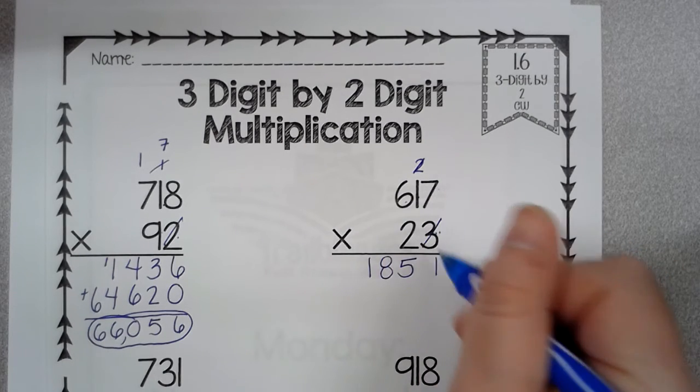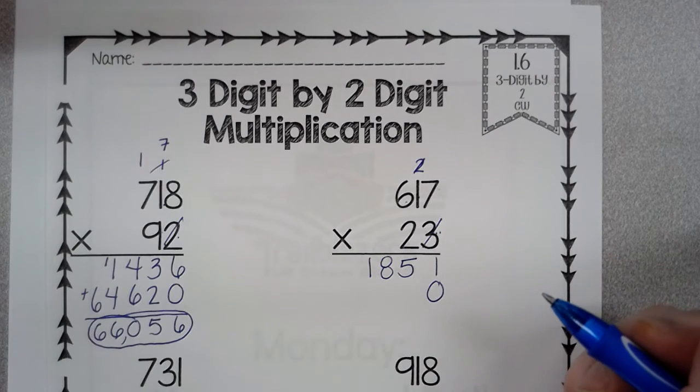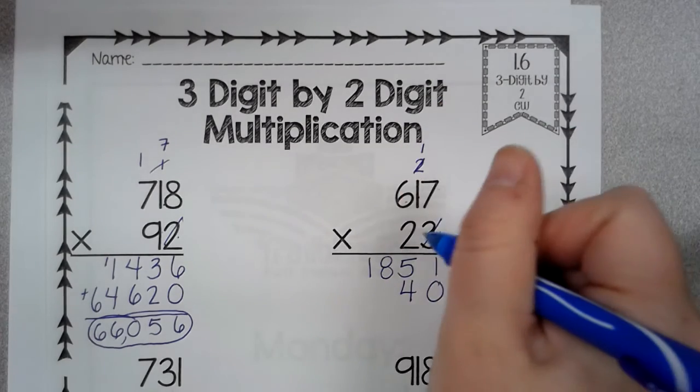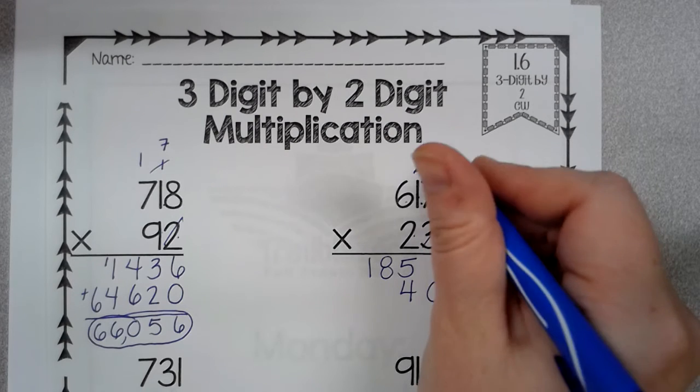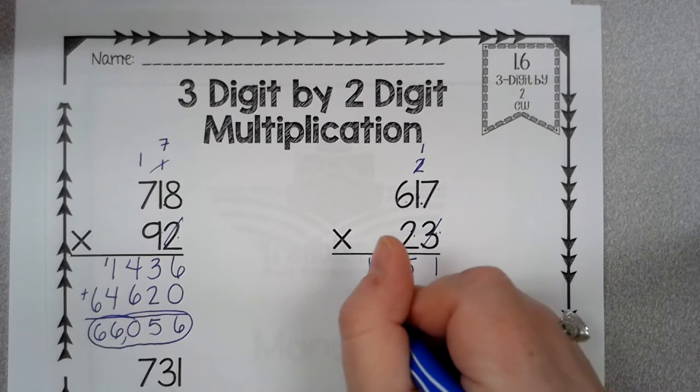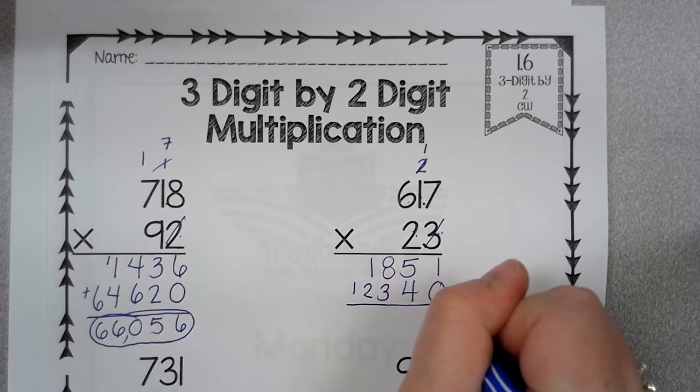Okay, I'm going to put a zero in the ones place because I'm moving to my tens. Two times seven is fourteen. Two times one is two plus one is three. Six times two is twelve.